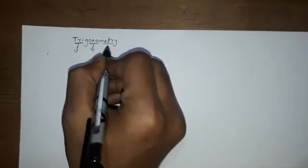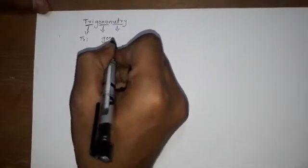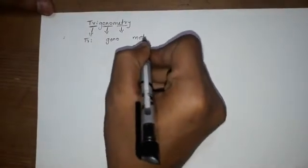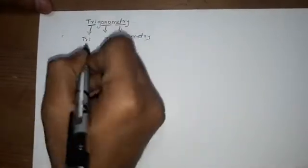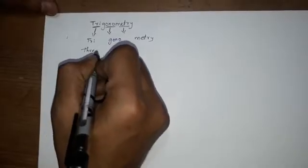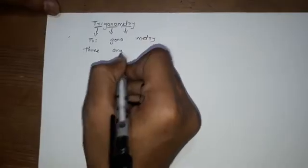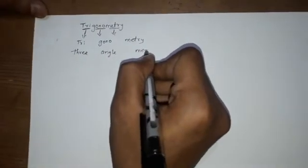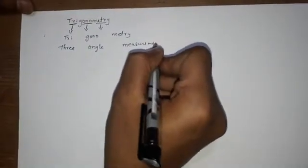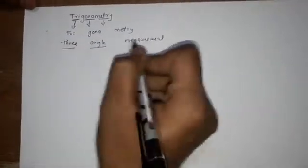Trigonometry — this name comes from three Greek words: 'tri' means three, 'gona' means angle, and 'metry' means measurement. Basically it means three-angle measurement, and we can find three angles in a triangle.